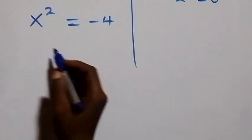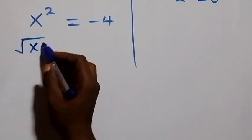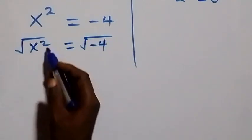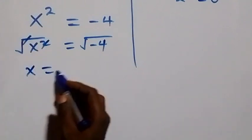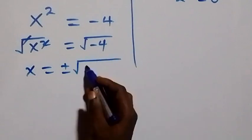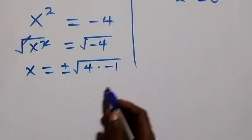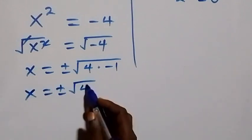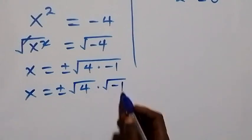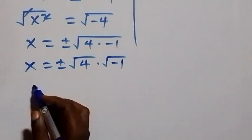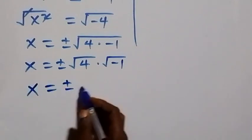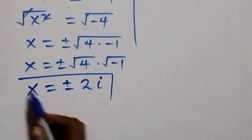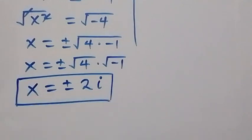Taking the square root on both sides, we have x equals plus or minus the square root of minus 4, which is the same as plus or minus the square root of 4 times the square root of minus 1. Since the square root of 4 is 2 and the square root of minus 1 is i, we get x equals plus or minus 2i — two complex solutions.